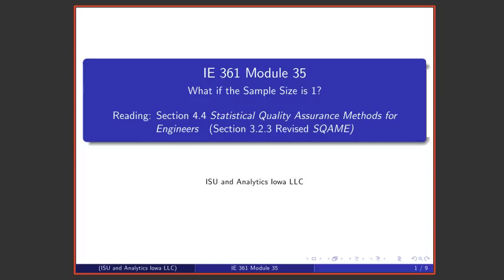Welcome to module 35 in this series of short lectures on statistical quality assurance and statistical process improvement. We've been discussing control charting and now want to address the issue of what one should do if one is collecting measurement data and is faced with a sample size of n equal to one.